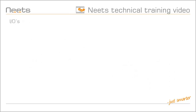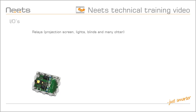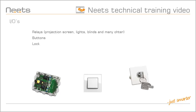The IOs can be used for many different things. Here are a few examples: relays that could control a screen, lights, blinds, or many other things; IO buttons; a lock that locks the system — perfect in classroom setups or other places where only certain people have access to the system; or motion sensors that could power up your system when somebody is in the room, or shut it down if no movement has been detected for a long time.